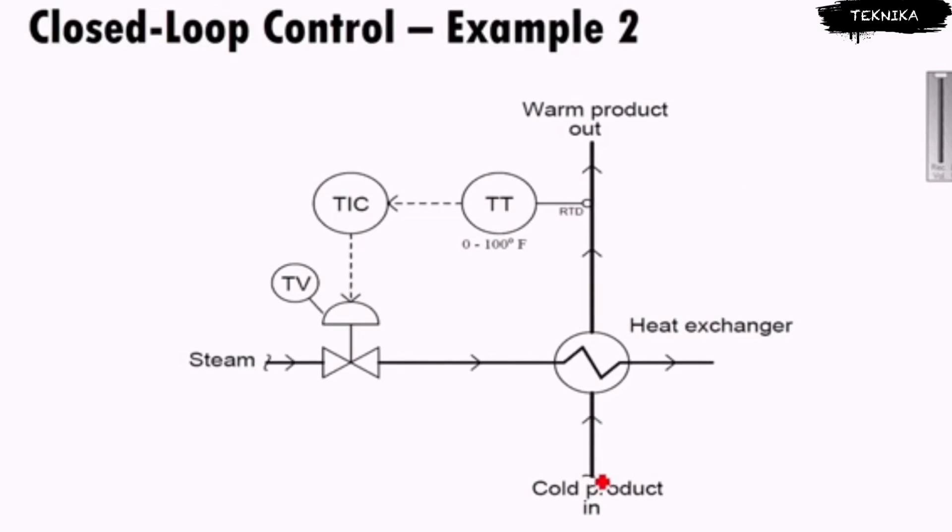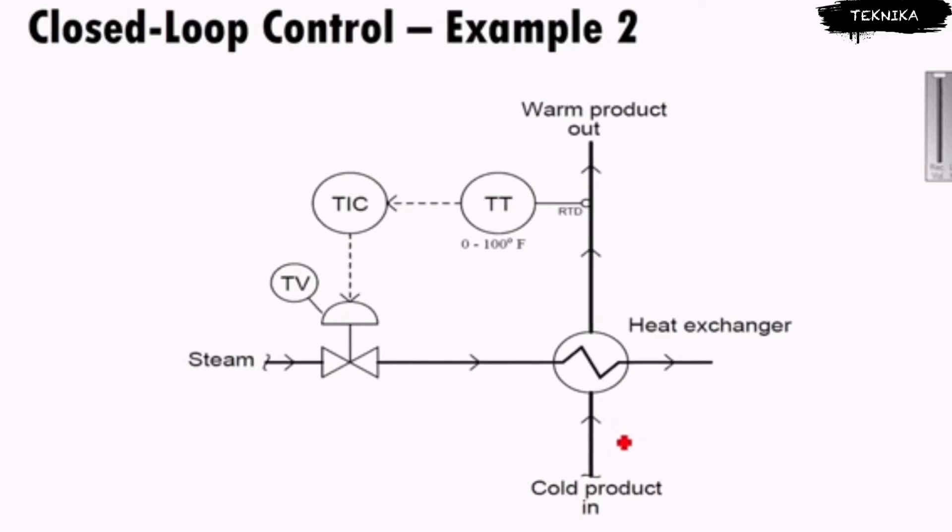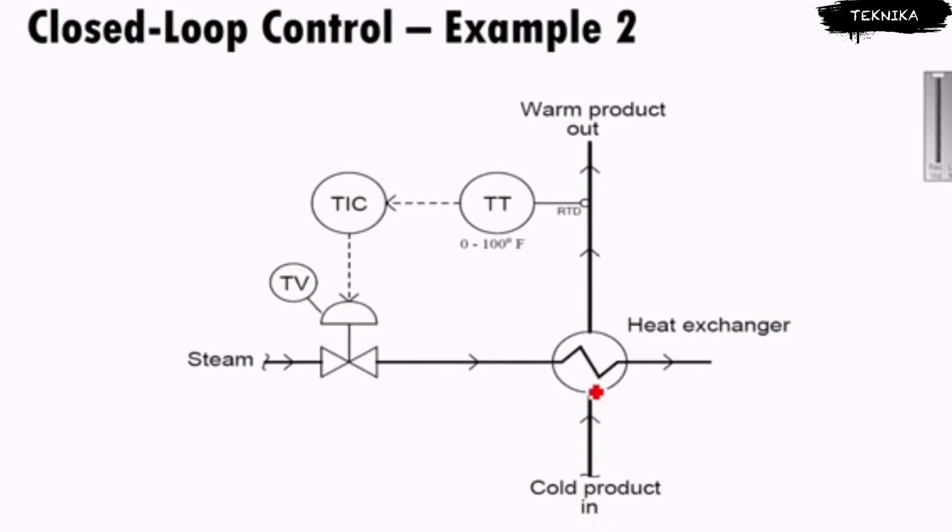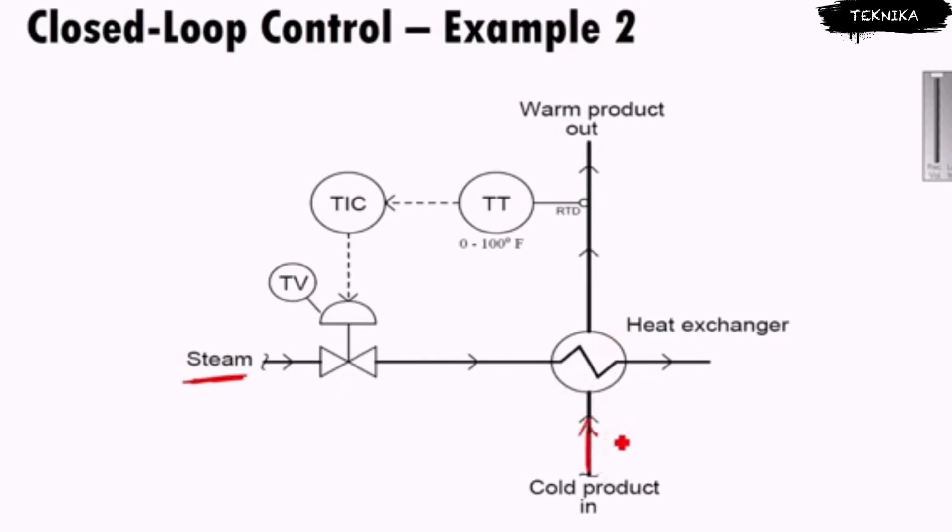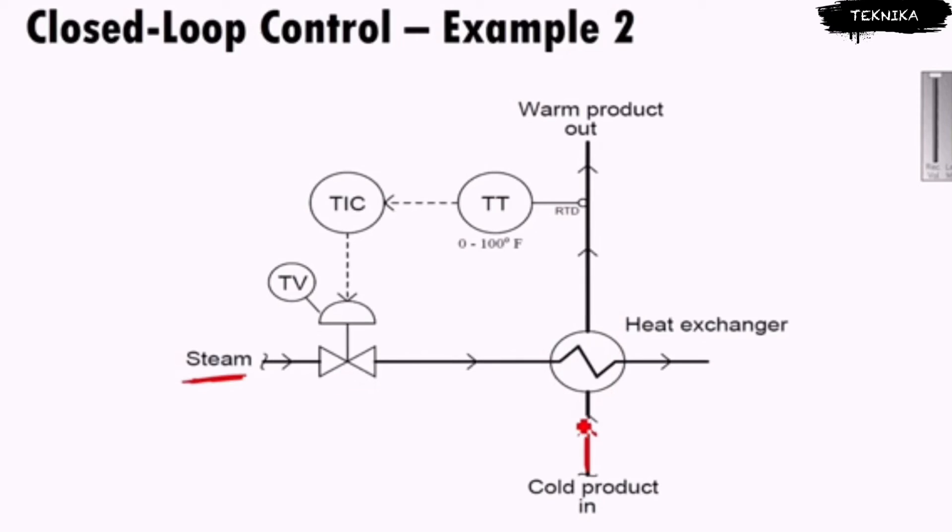Other closed loop control examples - we've got this cold product coming in, maybe this is a dough or some sort of mix. I always think of like cookie dough or something. I've got this cold cookie dough mixed up and I want to be able to extrude it or do something with it, so I need to warm it up a little bit. What I've got is steam coming through here and the steam is a heat exchanger. A heat exchanger is tubes going around - if this is a pipe with cold product in it, imagine tubes going around that pipe with steam. The pipe is going to heat up and the material inside that pipe is going to heat up as well, even though the steam and the cold product never actually touch.